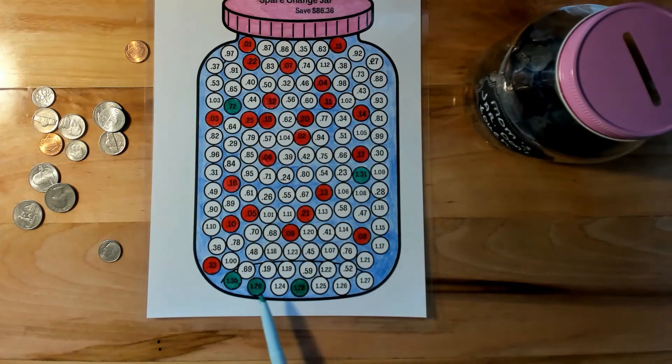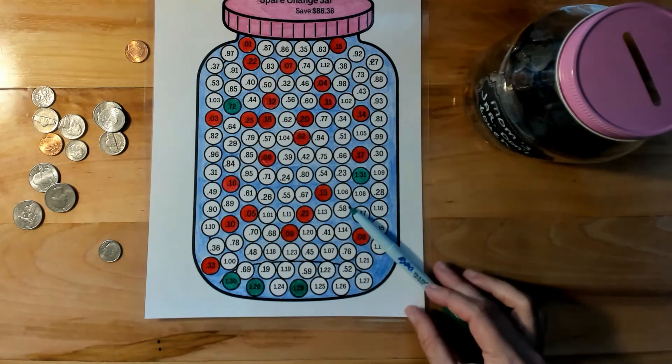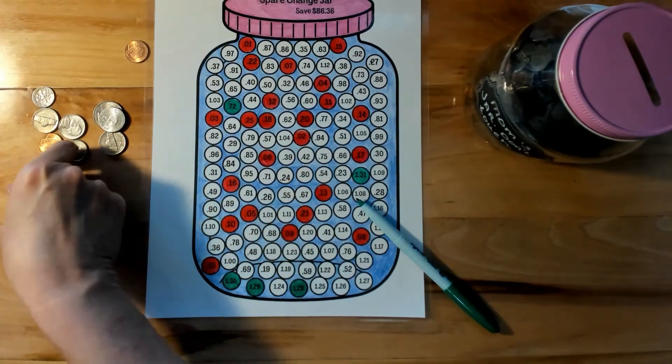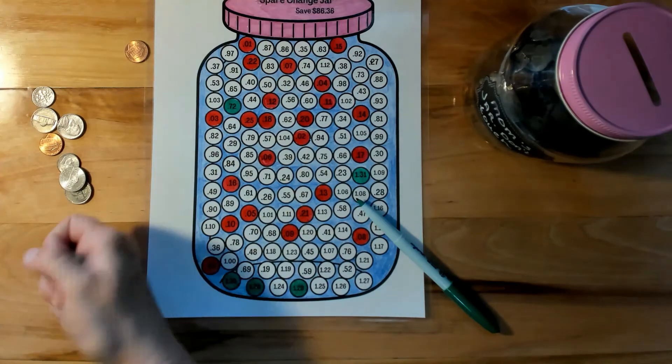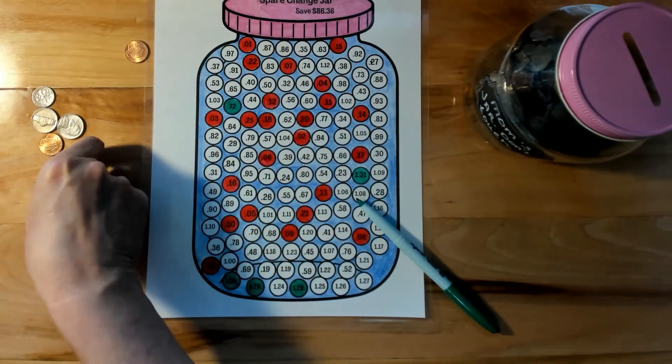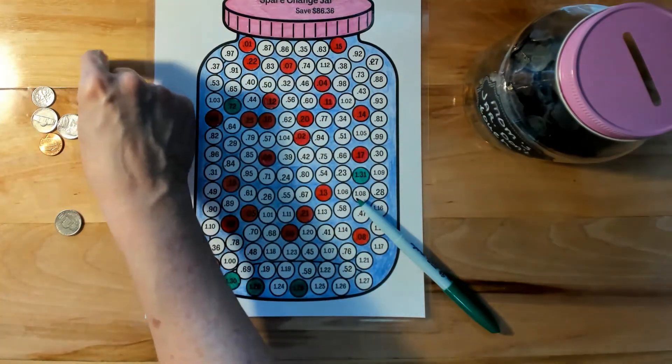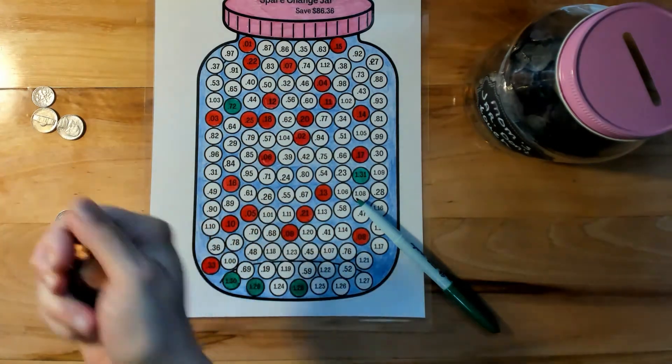Let's see. $1.27. Does anybody see $1.27? Yep, right there it is. So let's see if we got it. $1.10, $1.20, $1.25, $1.26, $1.27.